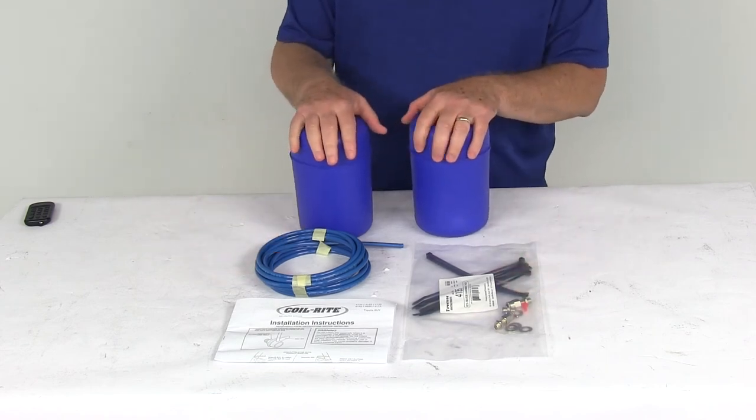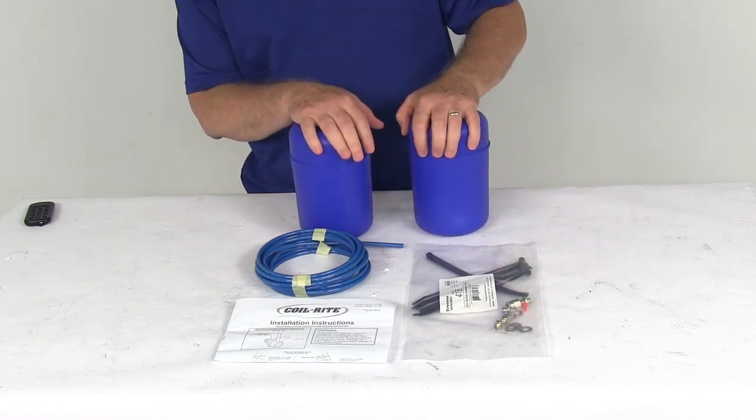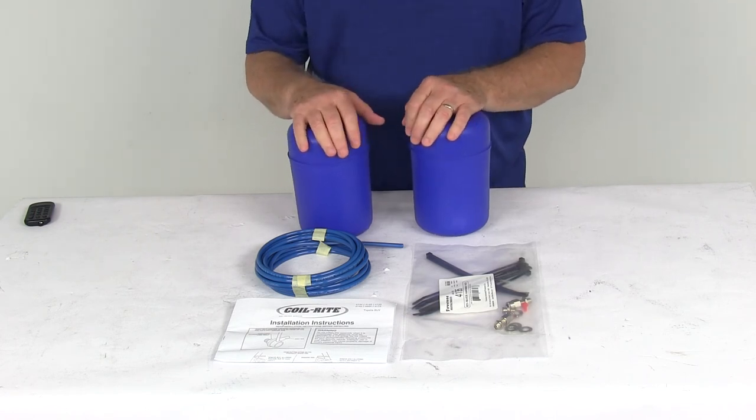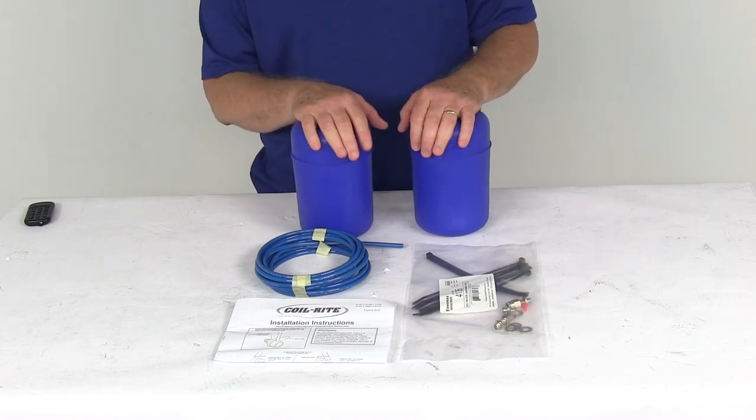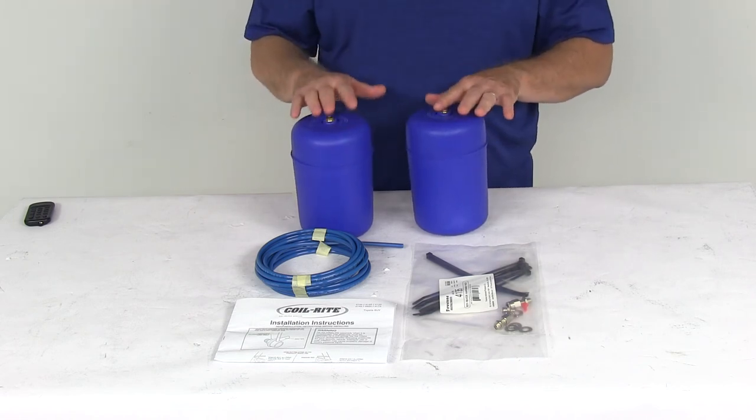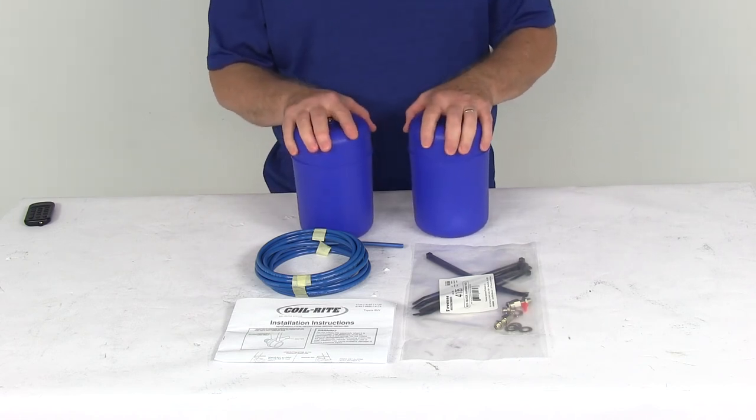Switches and gauges, compressors, and air tanks are available for quick and easy air spring inflation and deflation from inside your vehicle. All those items are sold separately on our website and are usually listed on this product page as related products.